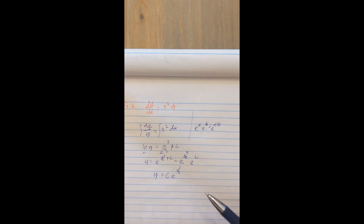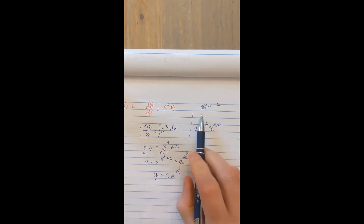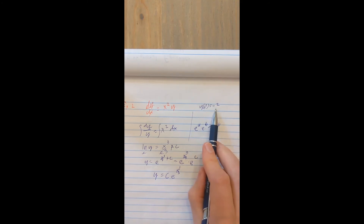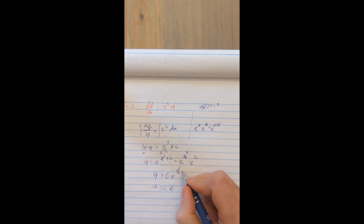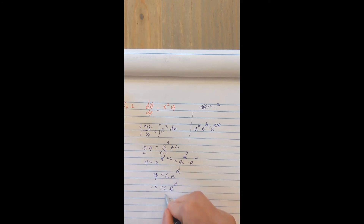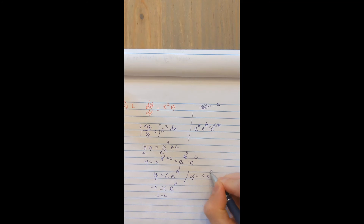For a particular solution, the problem would give more information — for example, y of 0 equals negative 2, meaning when x equals 0, y equals negative 2. Plugging in: negative 2 equals c times e to the 0 over 3, which equals c times 1, so c equals negative 2. My particular solution is y equals negative 2 times e to the x cubed over 3.